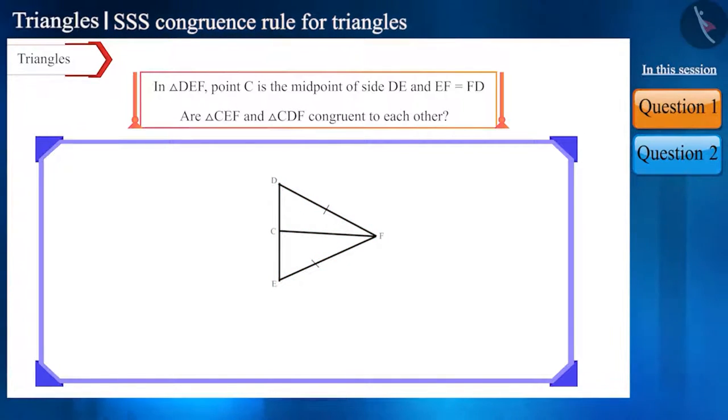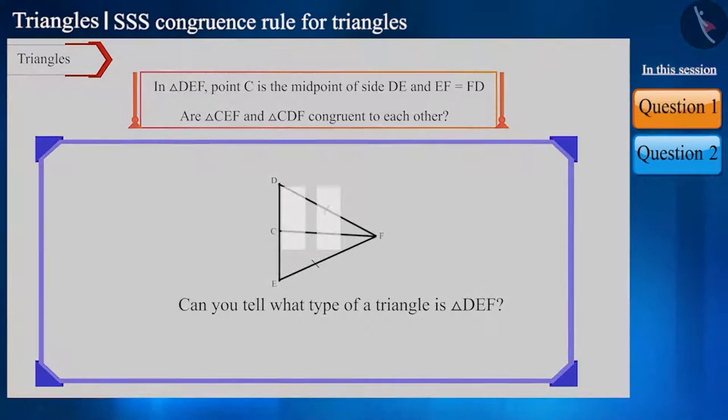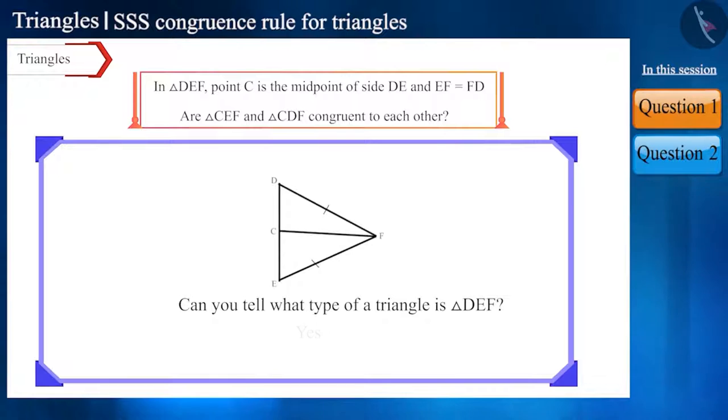Friends, can you tell what type of triangle this is by looking at the figure? You may pause the video to think about the answer. Yes, friends, two sides of this triangle are equal. Therefore, this is an isosceles triangle.